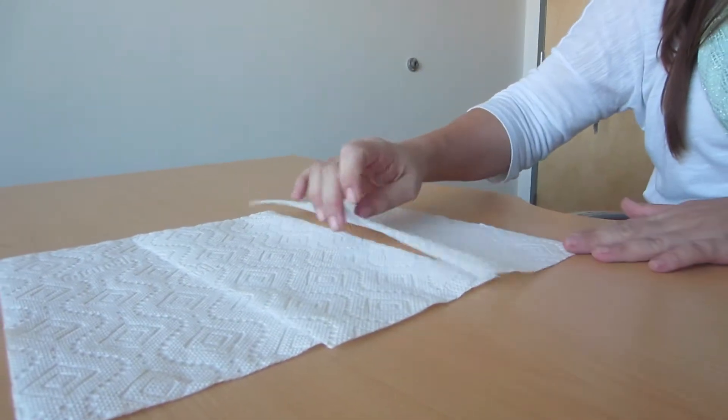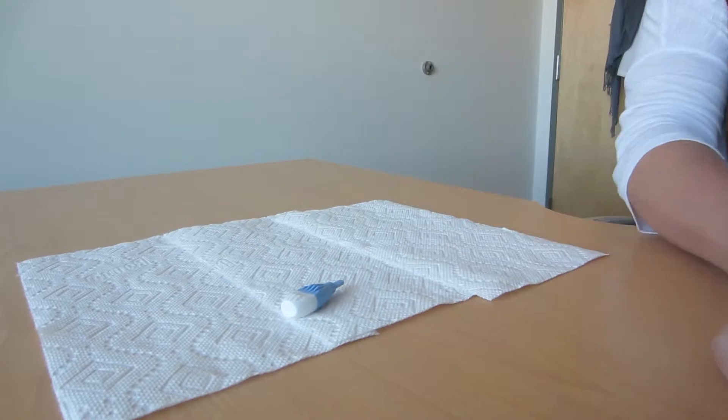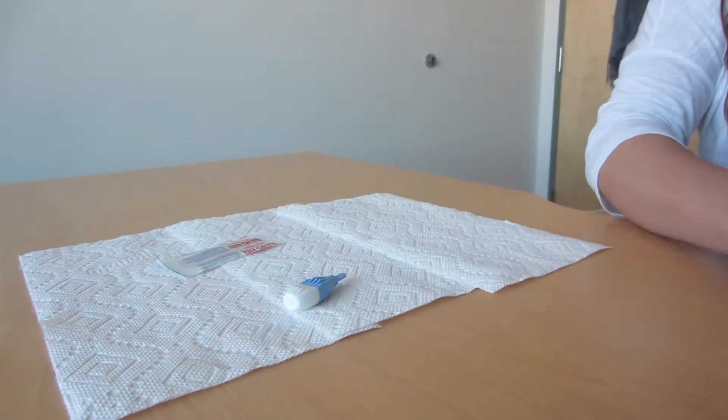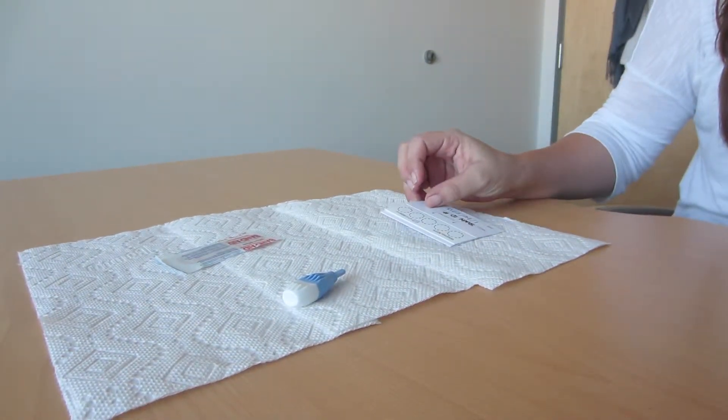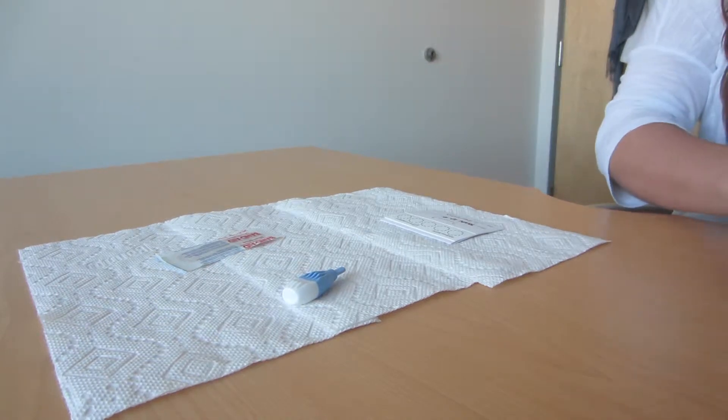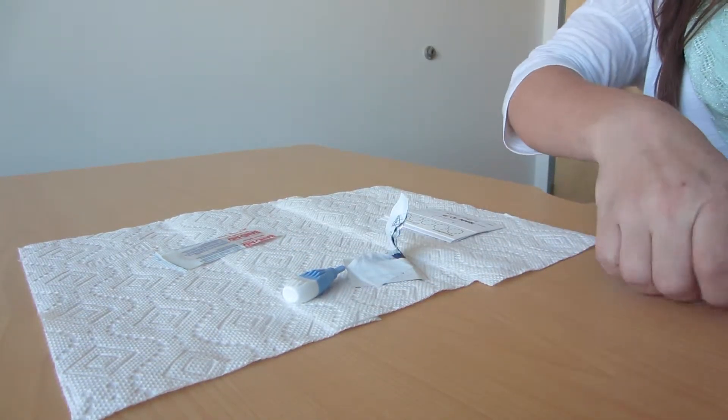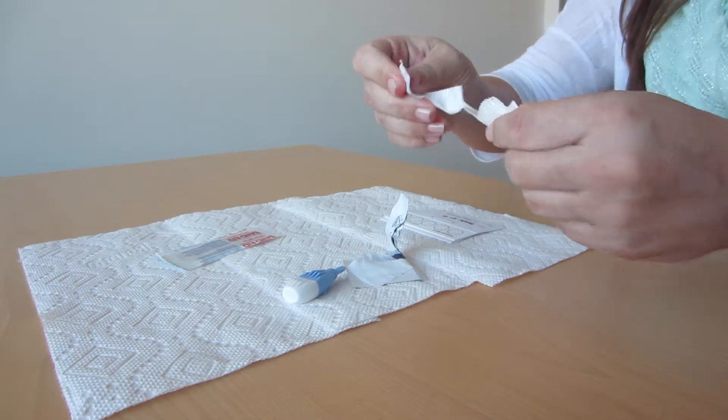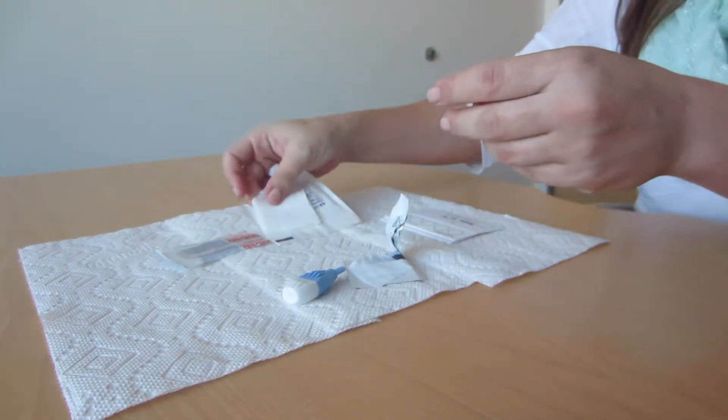Lay out three paper towels on a flat surface. Place the lancets, band-aids, and collection card with the circles exposed on the paper towels in front of you. Open and remove the alcohol wipe and the gauze pad and place them on the paper towels.